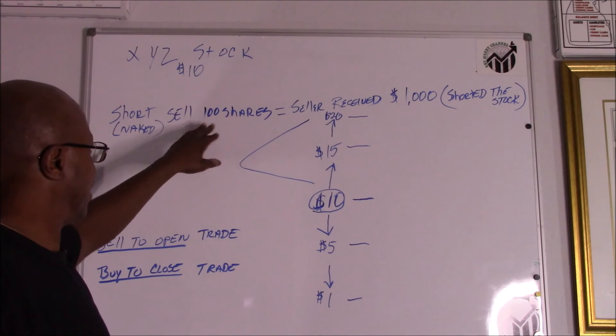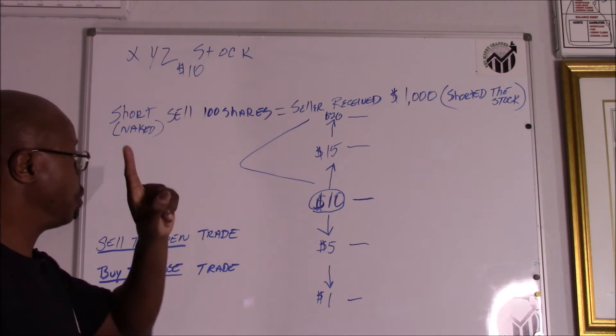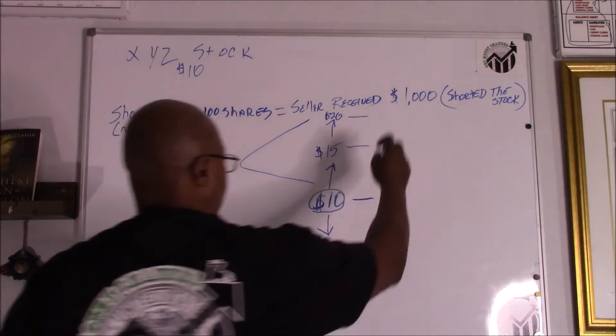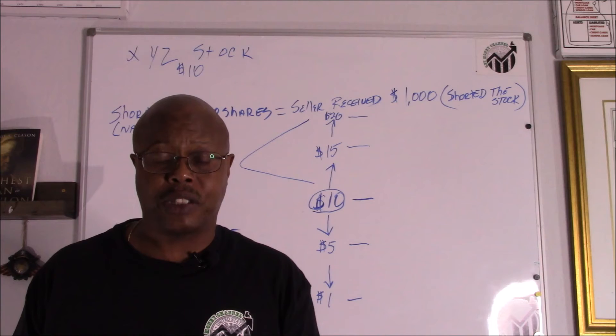So what they can possibly do to try to profit from this is they can go ahead and do what they call a short sale. In other words, they decided to short sell this stock and they sold 100 shares and they received $1,000. They've just shorted the stock.